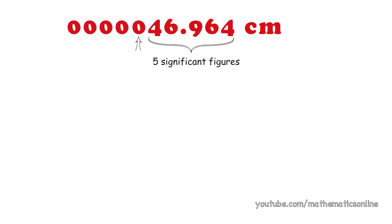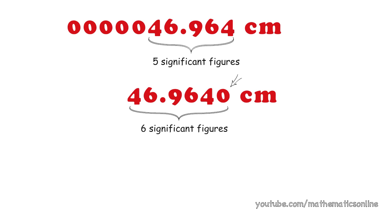What if we added a zero in the back of a number? Does this change the number of significant figures? Yes. This zero is considered significant because it indicates a more accurate measurement. Any zero added to the right of a number is considered significant.